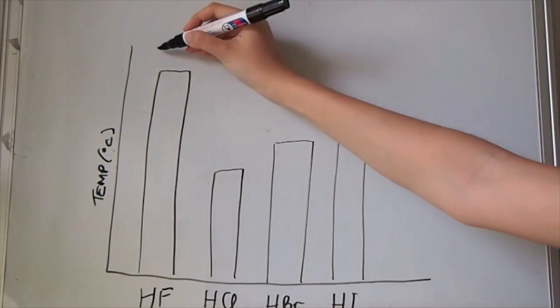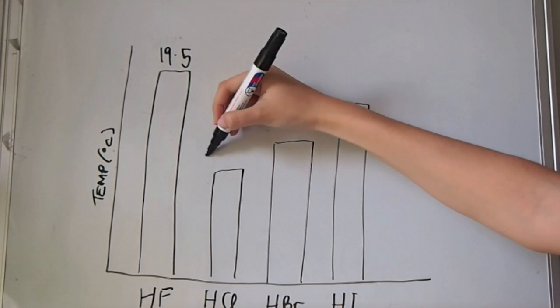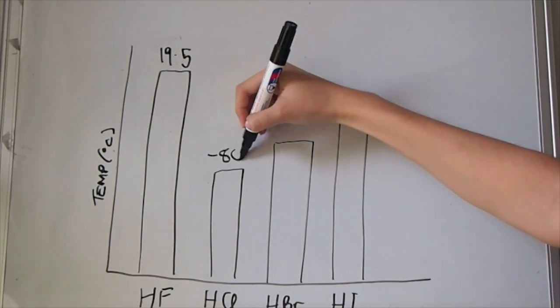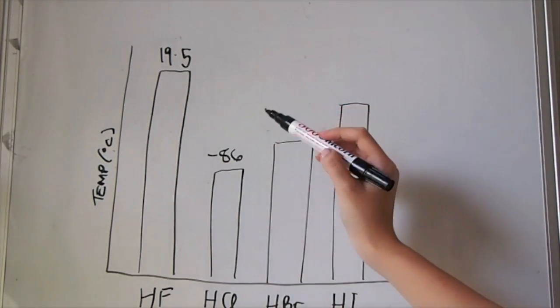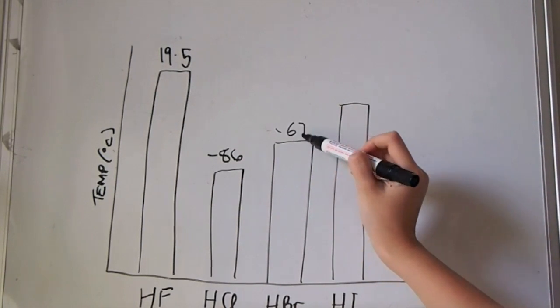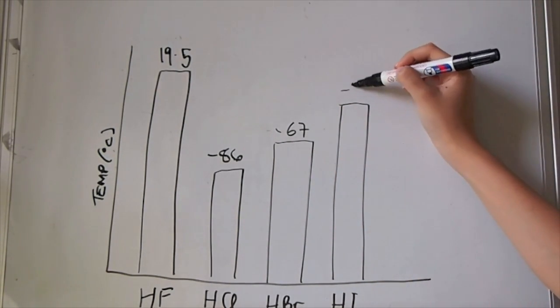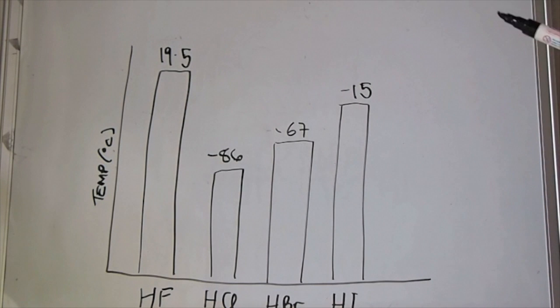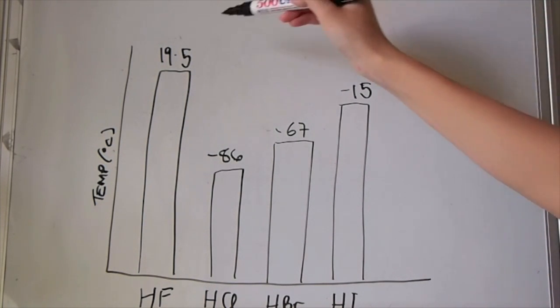The boiling points for each are 20 degrees for hydrogen fluoride, negative 85 degrees for hydrogen chloride, negative 67 degrees for hydrogen bromide, and finally negative 15 degrees for hydrogen iodide. Do you notice an anomaly in the trend?